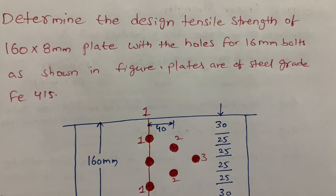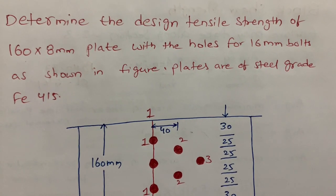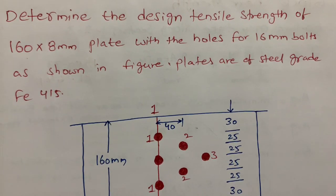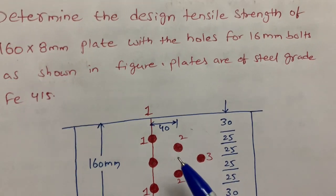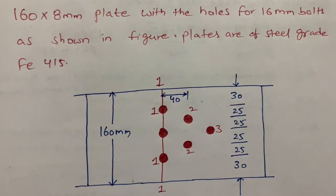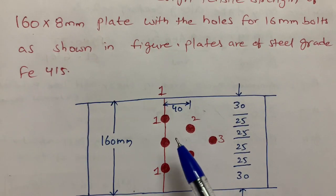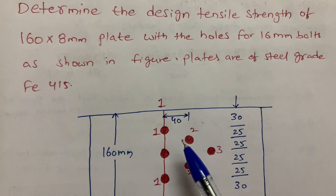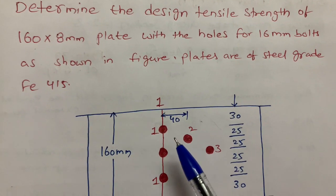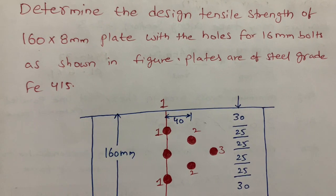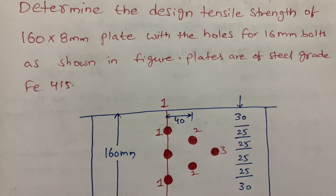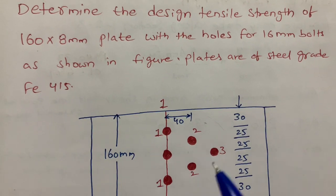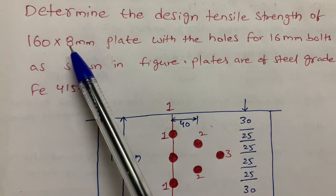I am going to solve a tension member problem. In this case, the bolting is arranged in a zigzag pattern. One steel member is connected with bolting arranged in a zigzag pattern. In my previous lecture I covered the linear bolt arrangement, but in this problem the bolting direction is a zigzag pattern.